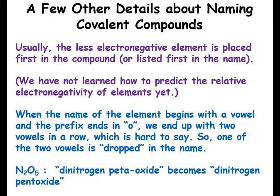We haven't learned how to predict relative electronegativity yet. When the element name begins with a vowel and the prefix ends in 'o', you can end up with two vowels in a row that's awkward to say — so one vowel is dropped. For example, this compound would be dinitrogen pent-oxide — it's actually pronounced 'dinitrogen pentoxide', dropping that 'a'.